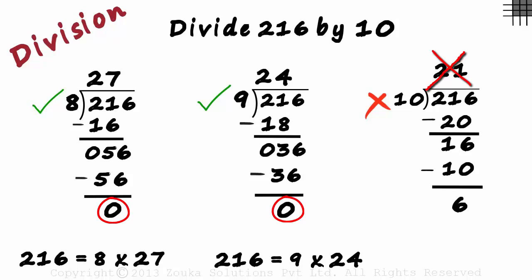Remember, if the remainder is 0, the divisor and the quotient are both factors of the dividend.